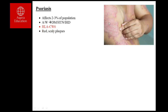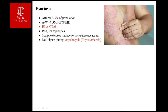The common sites for psoriatic plaques are the extensor surfaces — elbow, knees, sacrum, and scalp. Nail changes are also seen: pitting, which is small depressions on the nail surface, and onycholysis, which is separation of the nail from the nail bed. Onycholysis is also seen in thyrotoxicosis.